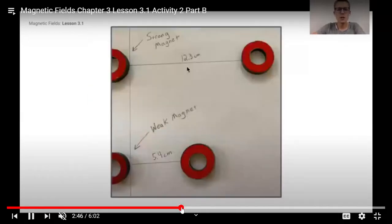This is strong to strong and this is weak magnet being the launcher and a strong magnet being launched. So now you can see here the strong magnet had a distance of 12.3 centimeters and a weak magnet had 5.4.